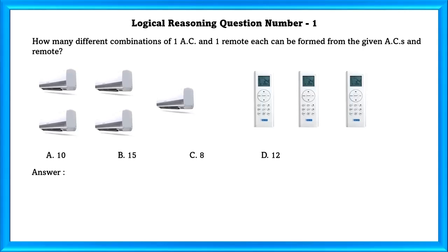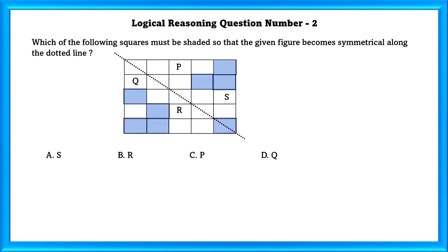How many different combinations of 1 AC and 1 remote each can be formed from the given ACs and remotes? Here are 5 ACs and 3 remotes. So 5 into 3 is equal to 15. So our answer is B, 15.